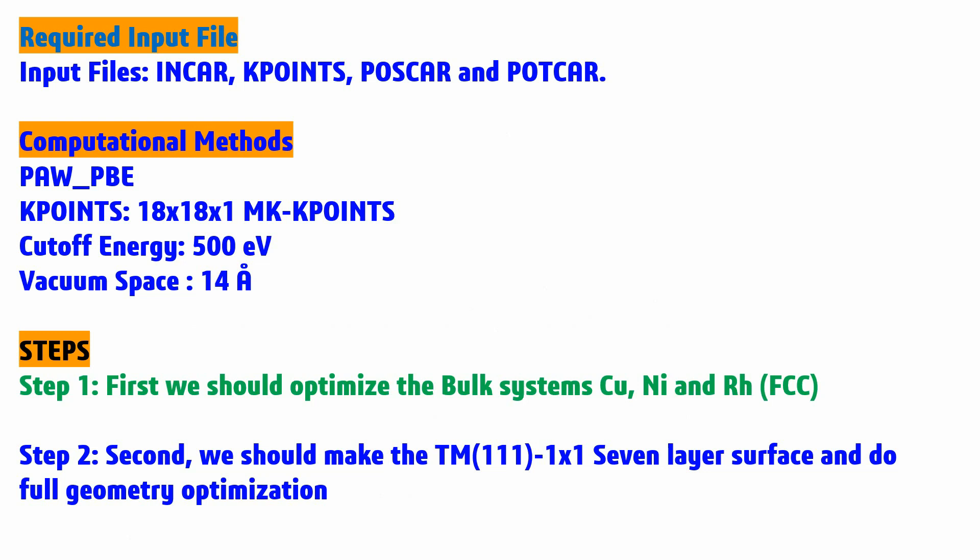The computational method I have used is what the paper already used. First we should optimize the bulk systems of Cu copper, rhodium FCC, and second we should make the transition metal (111) 1x1 seven layer surface and do full geometry optimization.